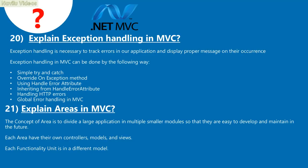Question 21: Explain areas in MVC. The concept of areas is to divide a large application into multiple smaller modules so that they are easy to develop and maintain. Each area has its own controllers, models, and views. Each functionality unit is in a different module.